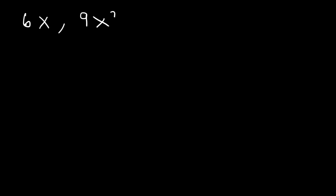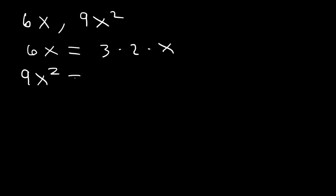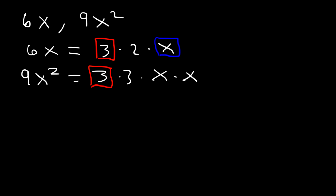Sometimes, you may need to find the GCF between two monomials, so sometimes variables will be involved. What is the greatest common factor between 6x and 9x squared? Well, the process is the same. We need to write the prime factorization of 6x. 6 is 3 times 2, and then we have an x. For 9x squared, we could break down 9 into 3 times 3, and x squared is x times x. Both lists contain at least one 3 and an x. Therefore, the GCF between 6x and 9x squared is 3 times x, which is just 3x.